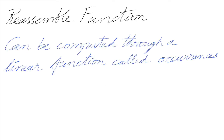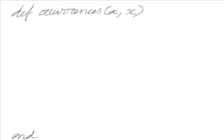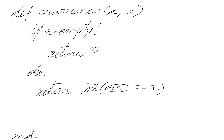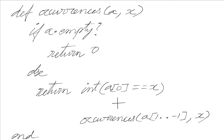So what does the reassemble function look like? The reassemble function can be computed through a linear function called occurrences. It takes two parameters: the list and the element for which we want to count occurrences in the given list A. If A is empty, we return zero. Otherwise, we check if the first element equals X — that boolean is converted to an integer: false becomes zero, true becomes one. We add this to a recursive call that skips the first element, since we have already processed it.